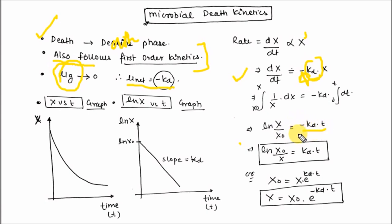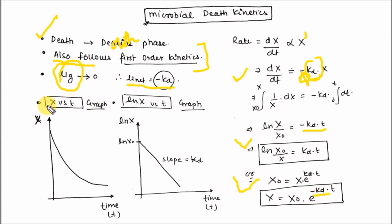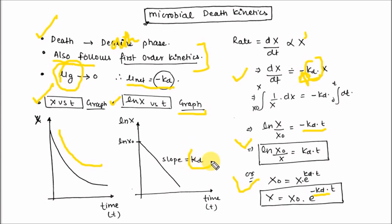If you want to eliminate the minus sign, reverse the ln value: ln(x₀/x) = kd·t. Taking the antilog: x = x₀·e^(-kd·t). You can plot the graph with these equations. If you plot x versus t, you will get an exponentially decreasing curve. And if you plot ln(x) versus t, you will get a straight line with negative slope, that is kd.